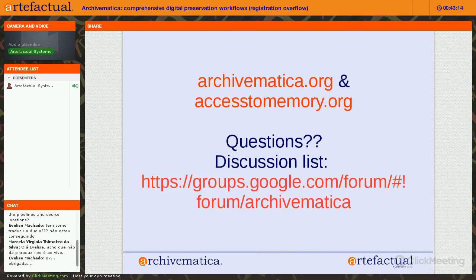One person asked if AtoM or ICA-AtoM would be helpful in preserving digital objects. As you saw in the demonstration, Archivematica fulfills the digital preservation workflows while AtoM lets you provide access to those digital objects while maintaining a link between your access copy and your archival storage system. We see them as two tools that fulfill two different purposes but work really well together. Since we've developed them both, we have the opportunity to make them as seamless as possible, but there are also other access solutions that could work with Archivematica workflows.